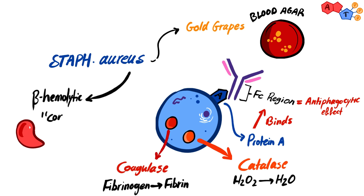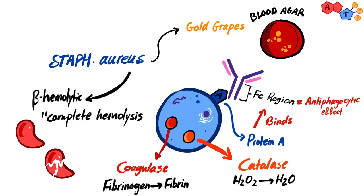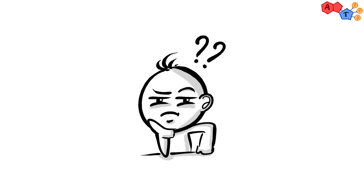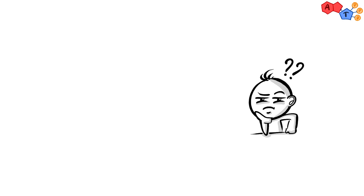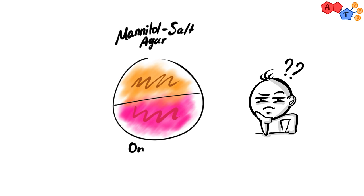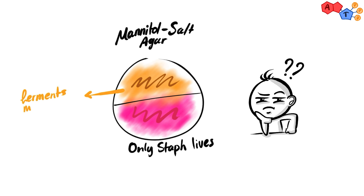Moreover, it's a beta-hemolytic bacteria, which means it results in complete hemolysis of red blood cells in blood agar. In the lab, if you want to confirm you're dealing with staph aureus, you can use mannitol salt agar. The salt will only allow staphylococcus species to grow, and if the bacteria can ferment mannitol, then it's aureus, and the agar will have a yellow color.